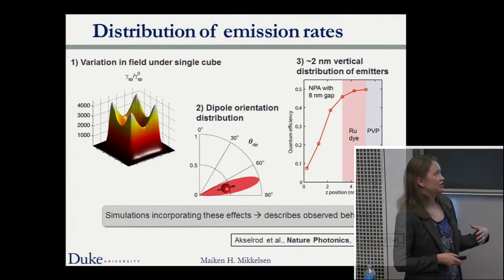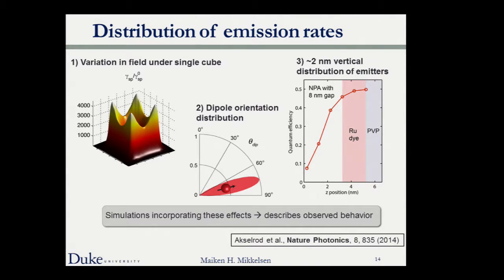The vertical distribution of emitters is also critical. Emitters intercalate about two nanometers into the polymers, and since quantum efficiency varies significantly with position from the middle, we average over a distance of about two nanometers in our simulations. When we account for all of this, it describes the observed behavior very well with no fitting parameters whatsoever.